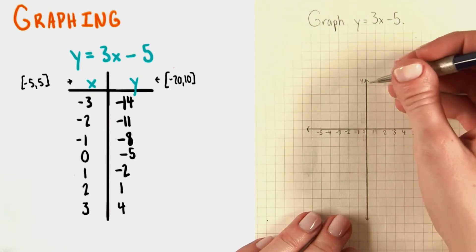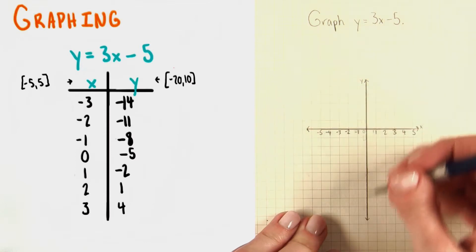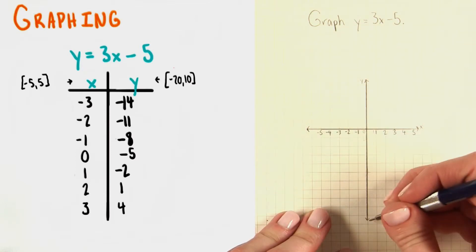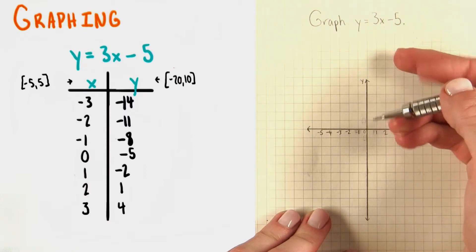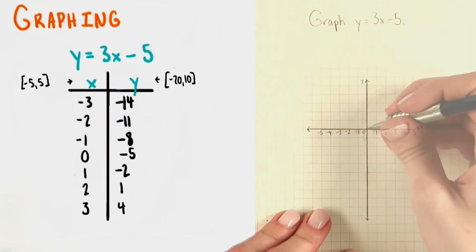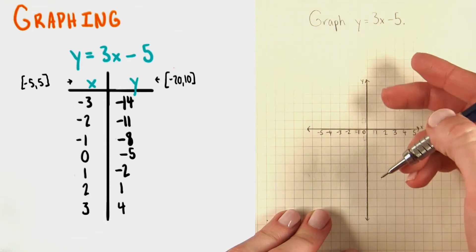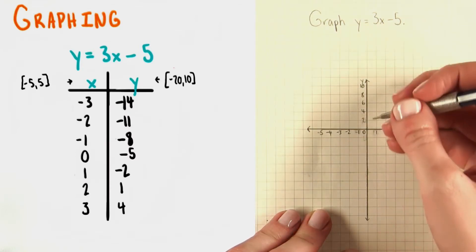Now in the y direction, we need to be able to go from positive 10 all the way down to negative 20. We have 5 boxes up here and 10 boxes down here. So that means we need to count by 2's with each step of the graph. So moving from 0 up 1 box is going to actually be stepping 2 in the y direction. And then down, we have the same scale again.